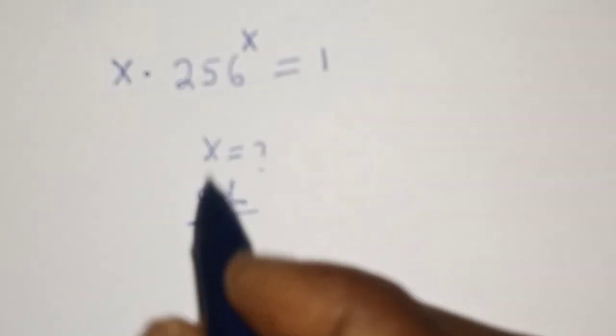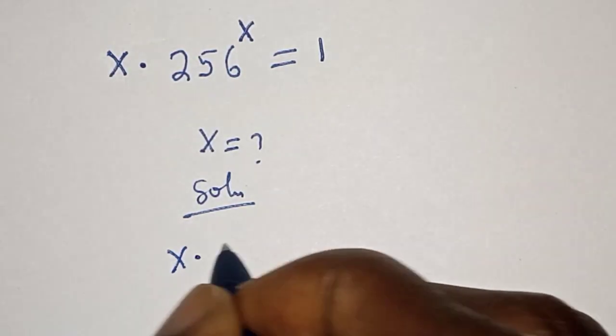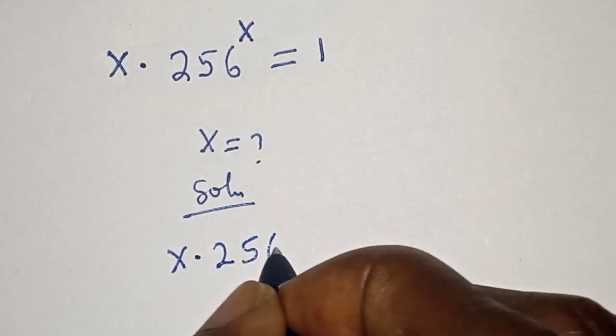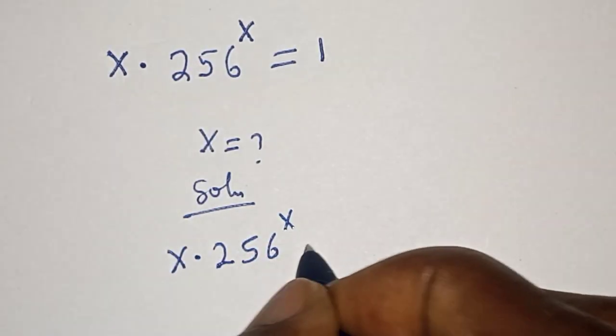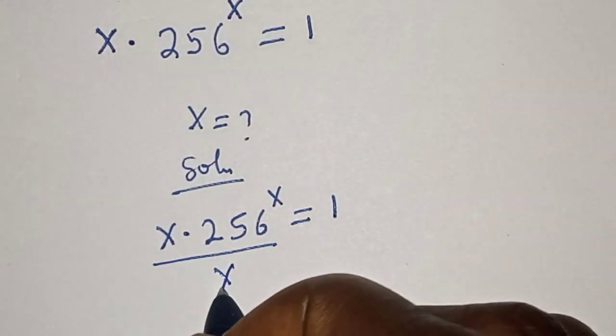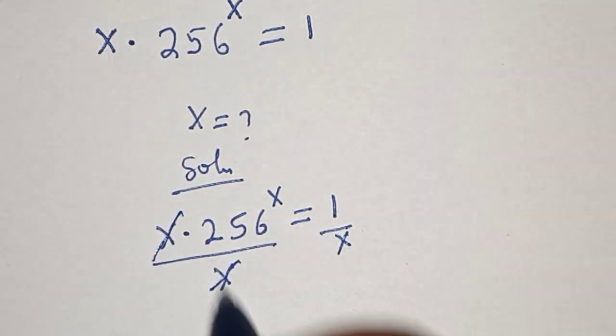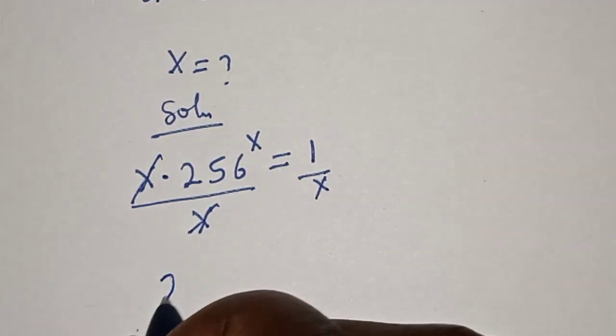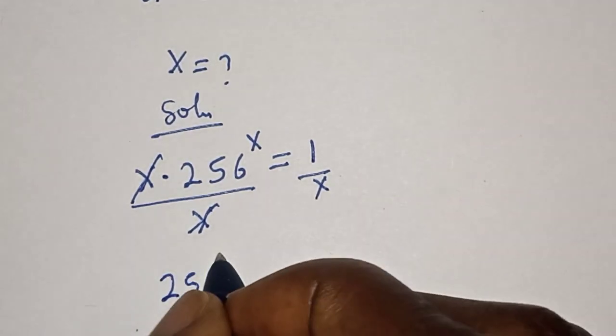Let's divide both sides by x. That is x multiplied by 256 to the power of x is equal to 1. Then this divided by x, this divided by x. This one cancels, so we have 256 to the power of x is equal to 1 over x.